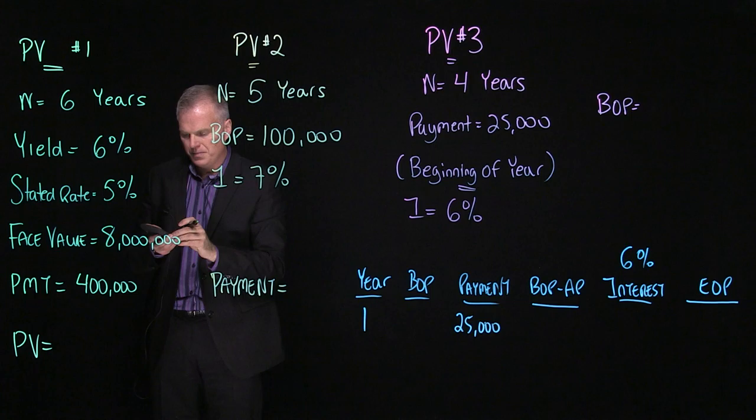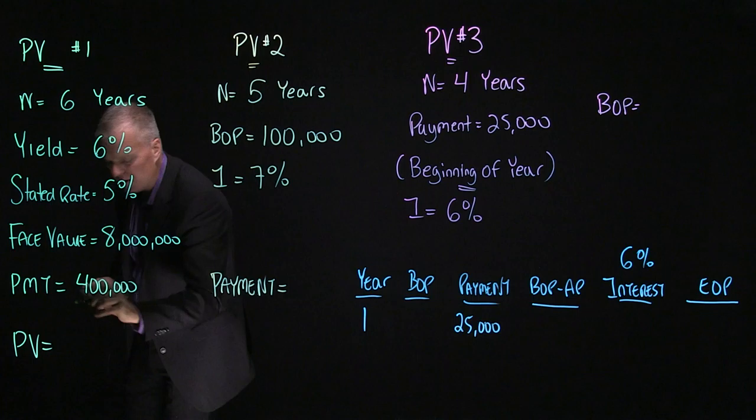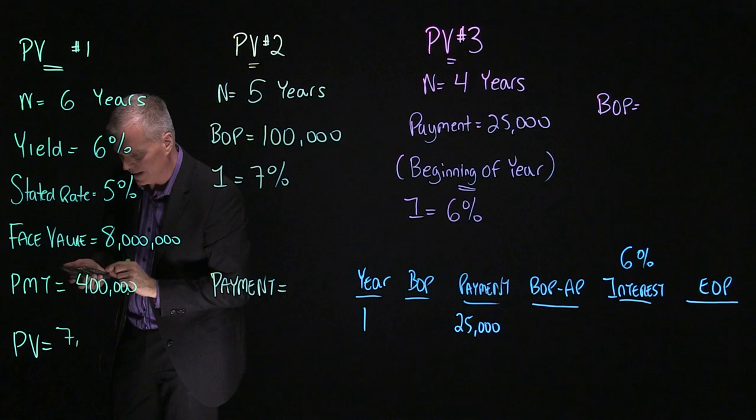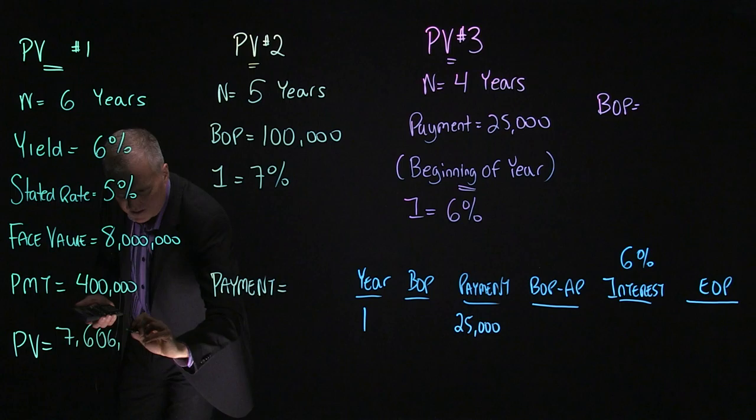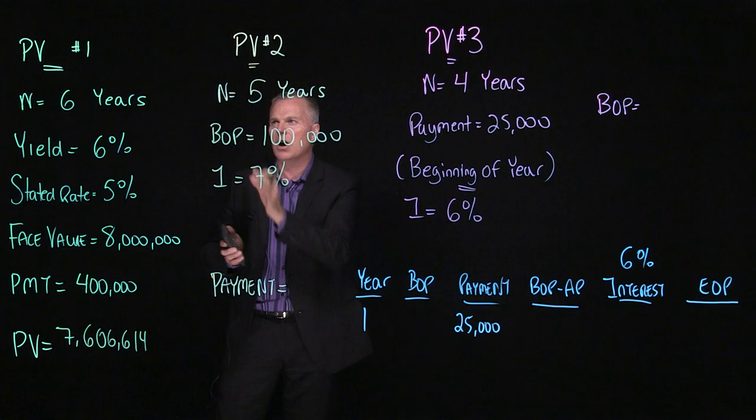So 8 million future value and then I hit compute present value and I get my value. Now it shows up as a negative, just change it to a positive—you can hit the plus minus number and you'll get 7,606,614. And that's how you calculate our first value.